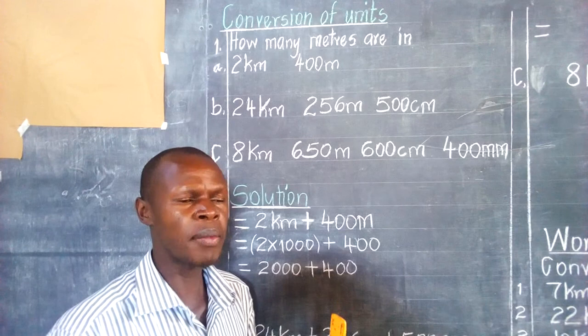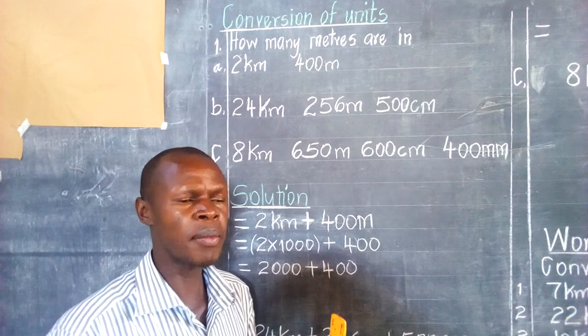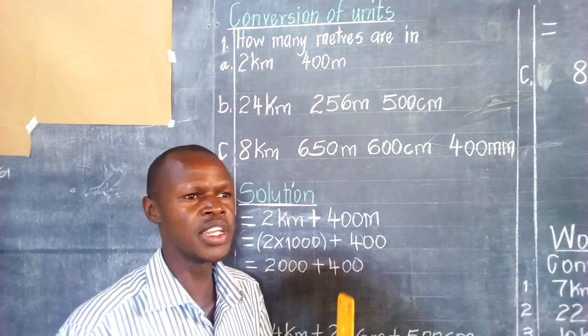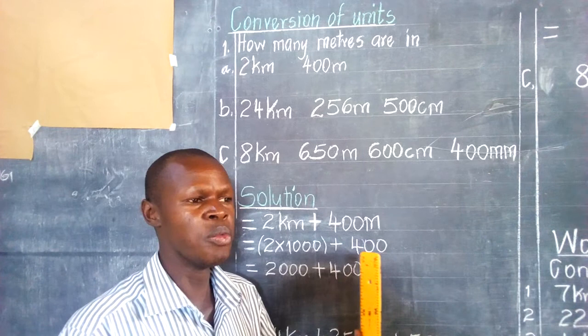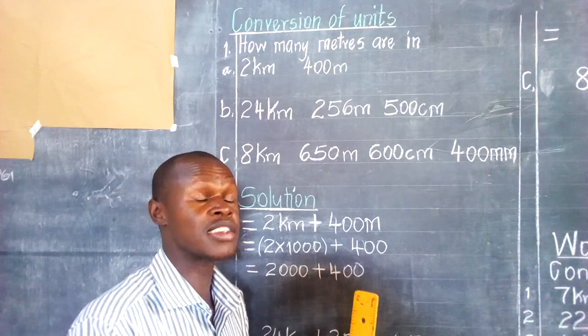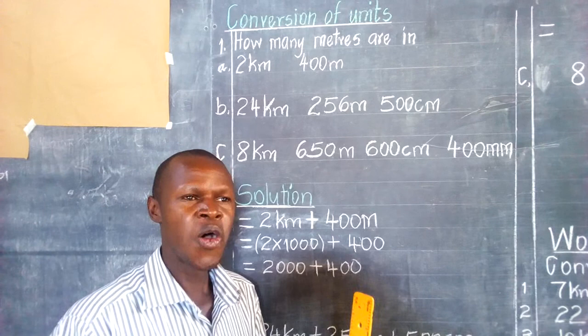Today's lesson is conversion of units. When we talk about conversion of units, we simply mean changing the units into different units. For example, you may have kilometres, then you are supposed to change the kilometres into metres, centimetres, millimetres, or any other unit.